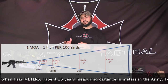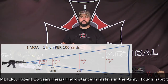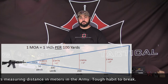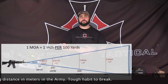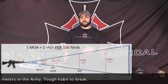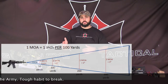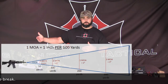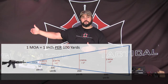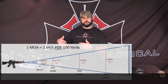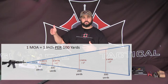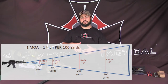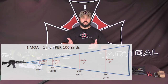It's actually 1.047 inches at 100 yards, but we round it off to one inch as our basis. Once we go to 200 yards it doubles to two inches, 300 yards is three inches — it's easy to remember. And when we go back to 50 yards, it's halved to a half inch.